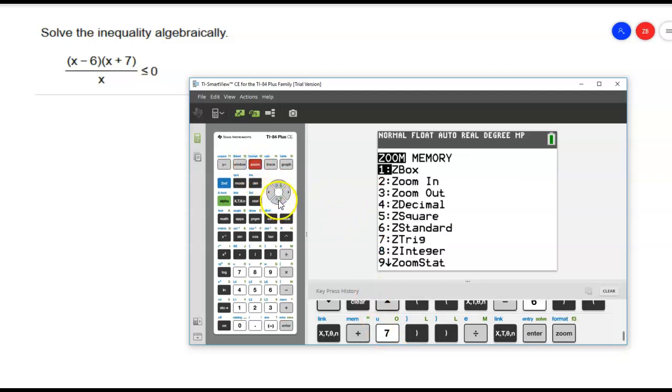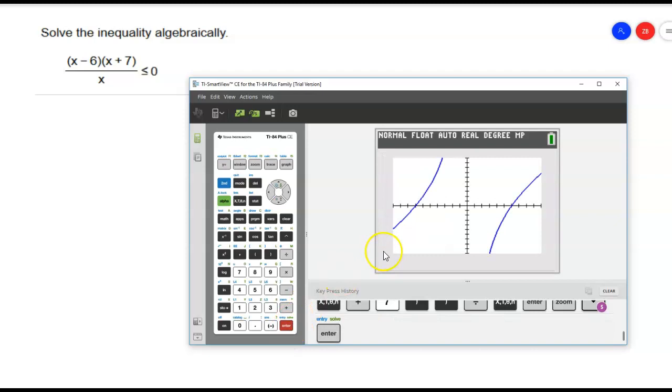Let's go ahead and do a standard zoom for now. And here it is right here. So we notice that it looks like my y values are less than 0 from negative infinity all the way until I get to this value right here, which I believe is negative 7.